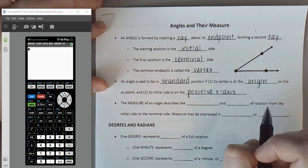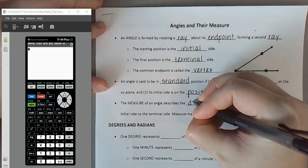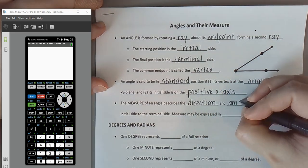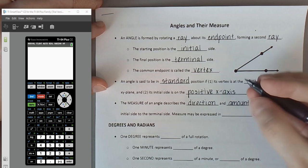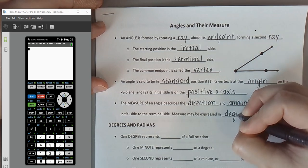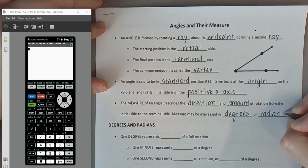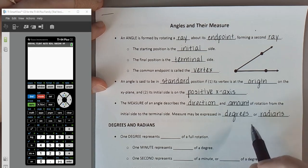The measure of an angle describes the direction and the amount of rotation to go from the angle's initial side to its terminal side. Measure may be expressed in degrees, which you're probably familiar with, or in a new measure called radians. We're going to look at angles measured using both techniques, and we'll talk about how to convert between these two units depending on the situation.